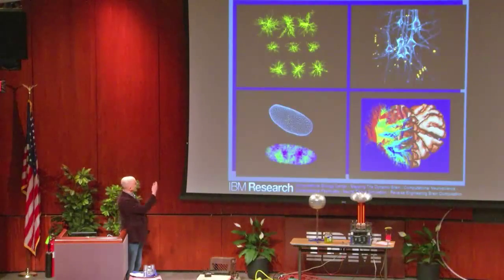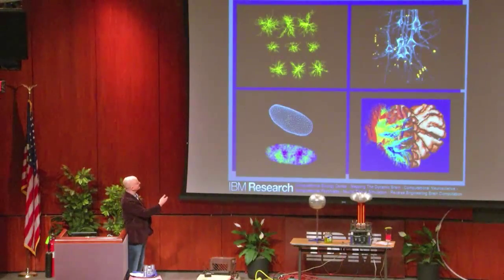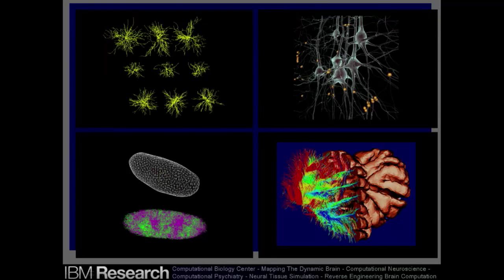Okay, so the brain computes everything. But what does it use to compute it with? Well, that's easy. These are the components. We have neurons, we have microcircuits, brain nuclei, and whole brain systems. So we know what the brain computes and we know what it computes it with. So we're done, right?